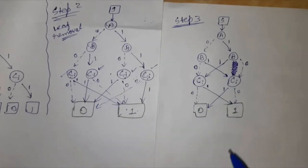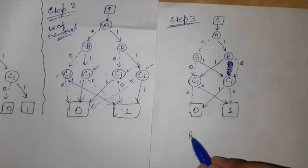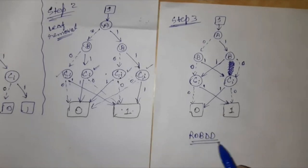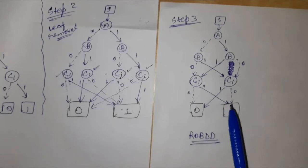So now we have arrived at our diagram which I can refer to as ROBDD for this particular question, that is full adder circuit sum.